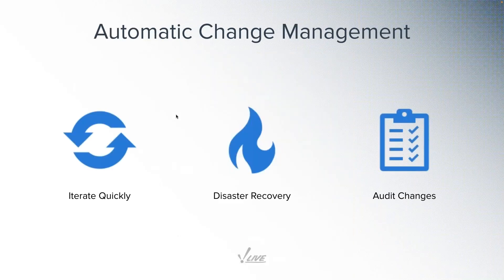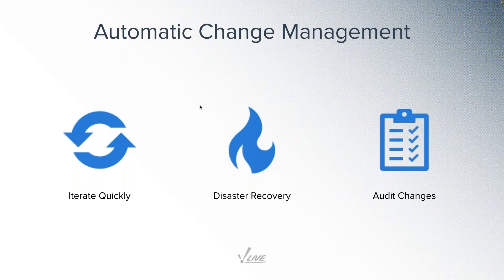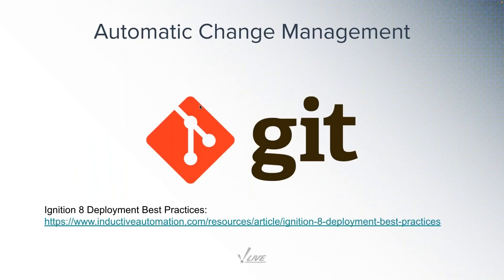The last example I want to talk through is change management. An important driver of digital transformation initiatives is making companies more agile. In order to adapt to changing market conditions and customer preferences, companies must have the freedom to iterate rapidly to stay competitive. At the same time, moving quickly sometimes means breaking things, so it's equally important to plan for the inevitable disaster scenario so you can roll back to a known good state. A key technology for enabling automated change tracking is a version control system like SVN or Git, which while around for decades are quite new to the industrial automation world.